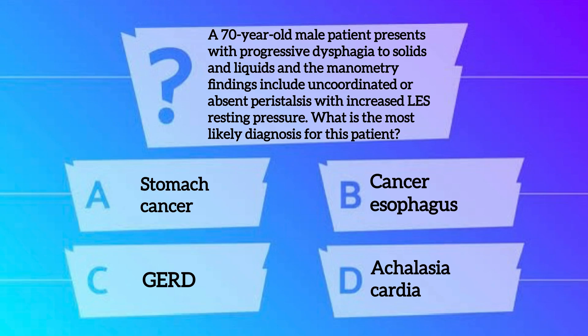Let's begin by practicing a few MCQs. The first MCQ: a 70-year-old male patient presents with progressive dysphagia to solids and liquids, and manometry findings include uncoordinated or absent peristalsis with increased LES resting pressure. What is the most likely diagnosis? Options: first, stomach cancer; second, cancer esophagus; third, GERD; fourth, achalasia cardia. The right option is achalasia cardia.